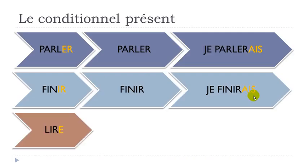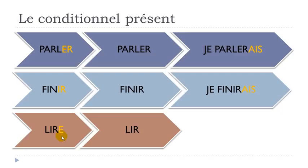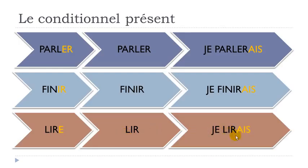For the third group of verbs we will have some exceptions, but the main rule is: if the verb ends with a final E, like lire (to read), you take that E away and then add your ending — je lirai. So you get three forms: je parlerai, je finirai, je lirai. Parler is to speak, finir is to finish, lire is to read.